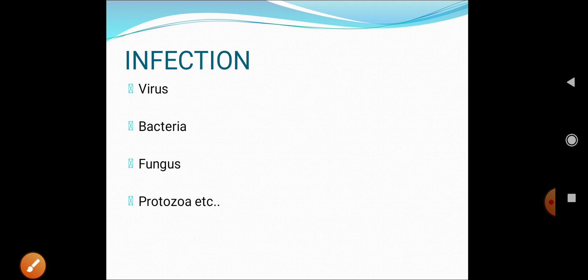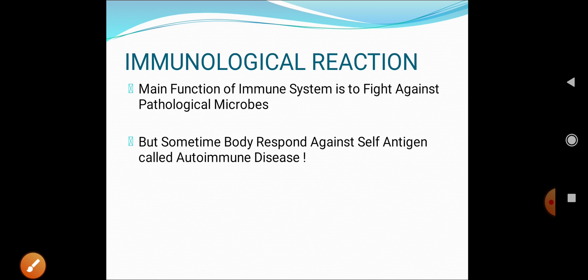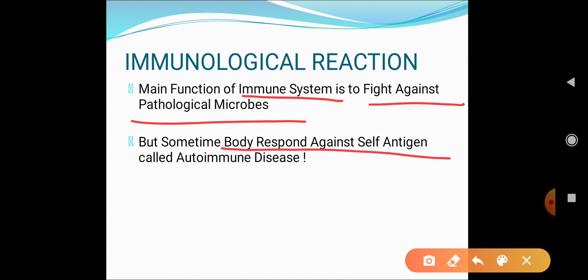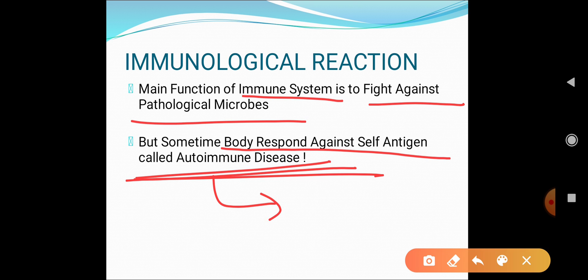The fourth cause is immunological reactions. The main function of the immune system is to fight against pathological microbes, but sometimes the body responds against self-antigens — reacting with our own cells — and that is called autoimmune disease. A separate video covers the mechanism of autoimmune disease development. Autoimmune reactions can cause significant cell injury.